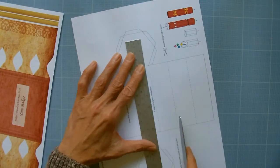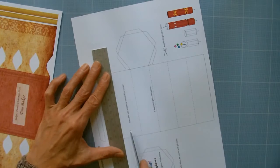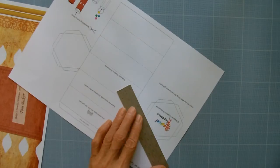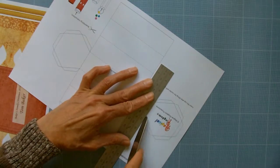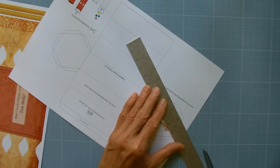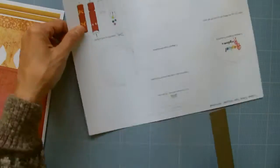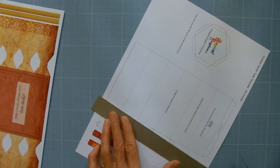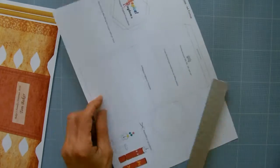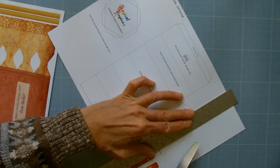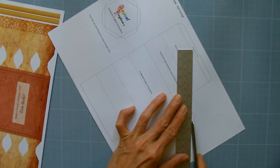Now do the same with the cracker in a tube template. Cut out both templates with a craft knife when you have finished scoring.